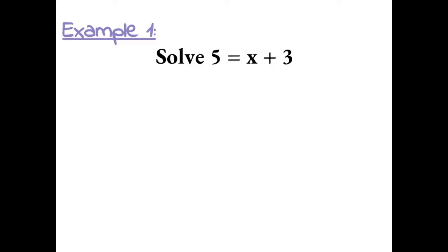Example 1: Solve 5 equals x plus 3. By solving this, we want to know what x equals. We want to get x by itself on one side of the equal sign. To get x by itself, I'm going to have to get rid of the plus 3 by doing inverse operations. The inverse operation of adding 3 is subtracting 3.